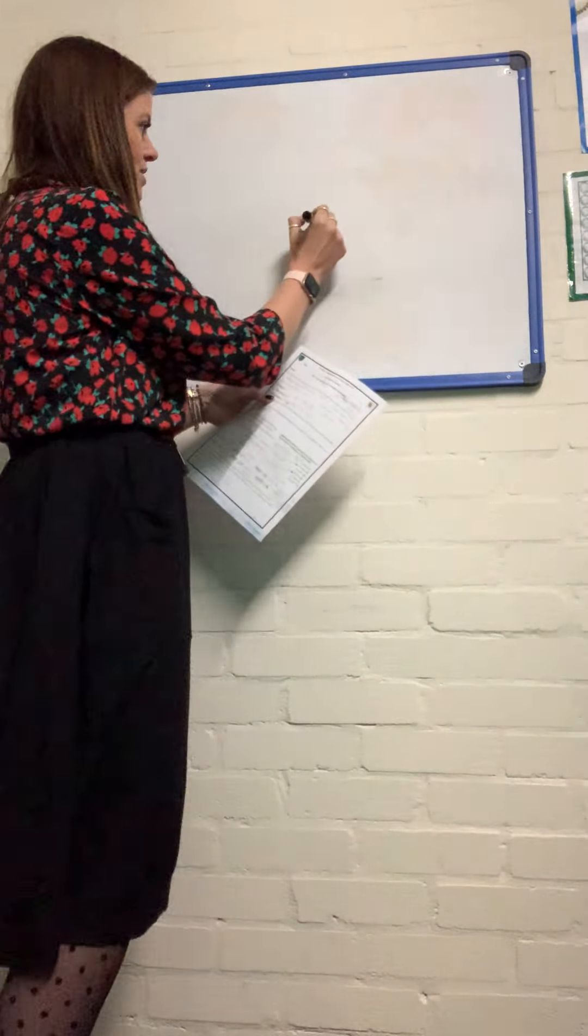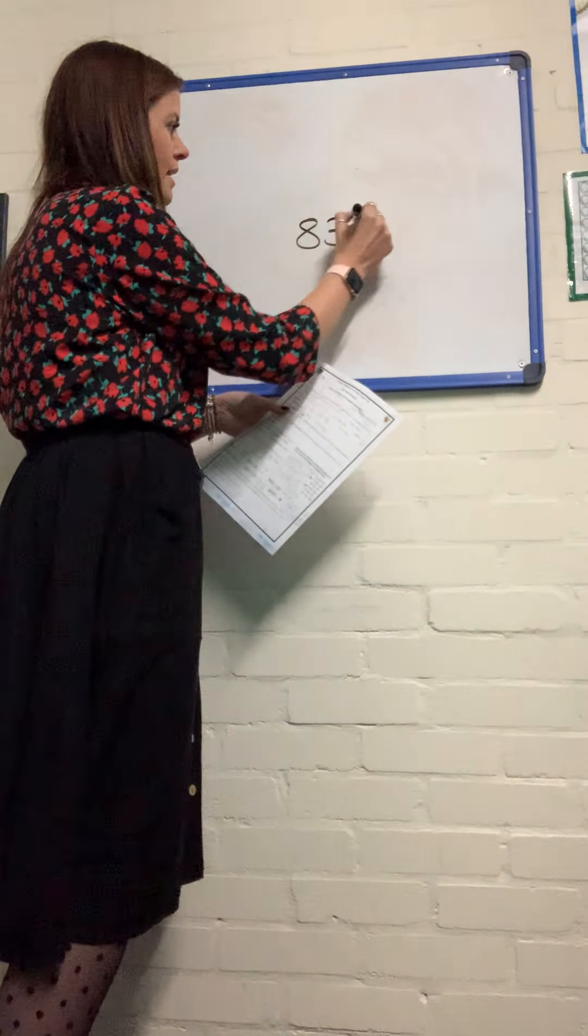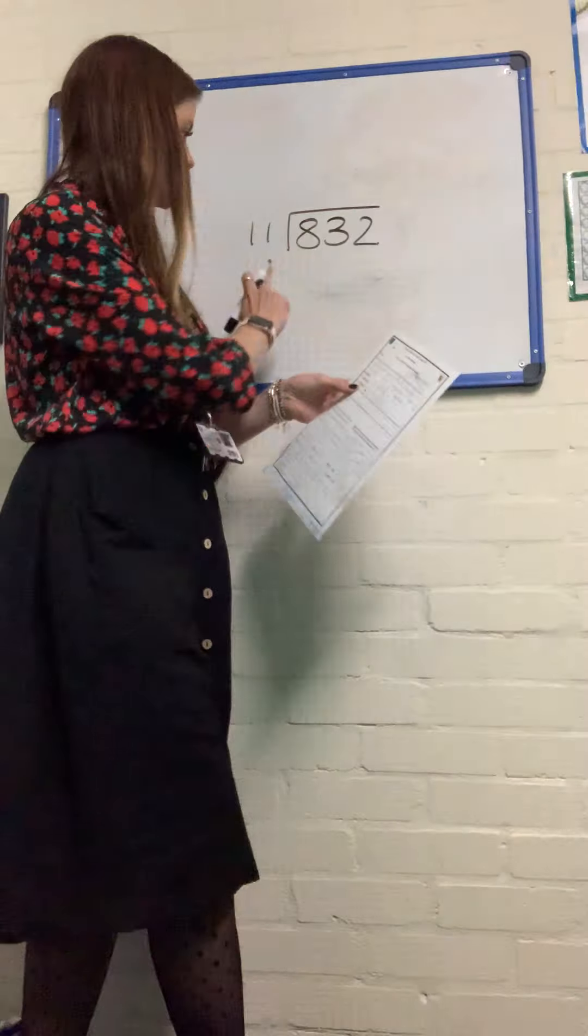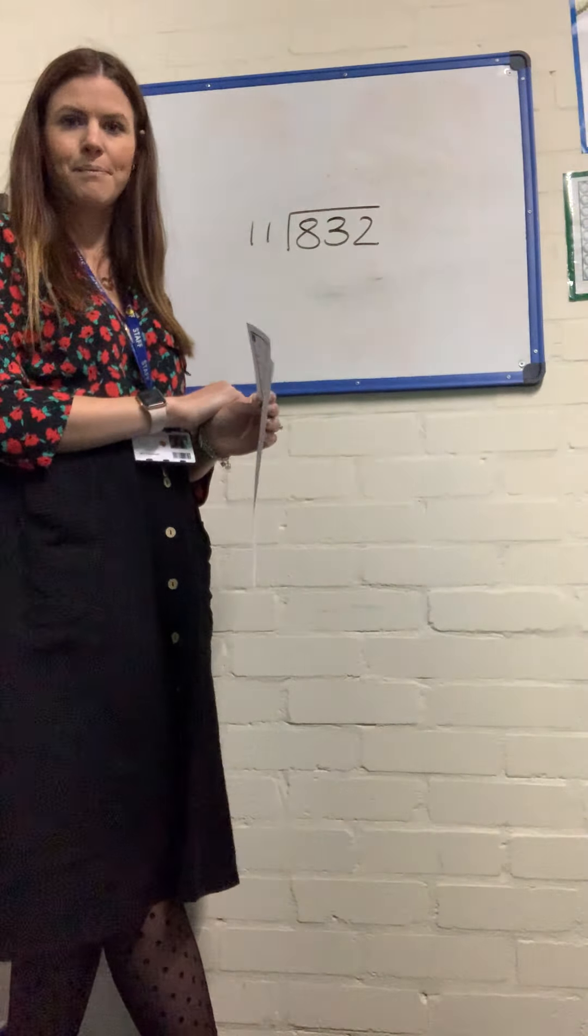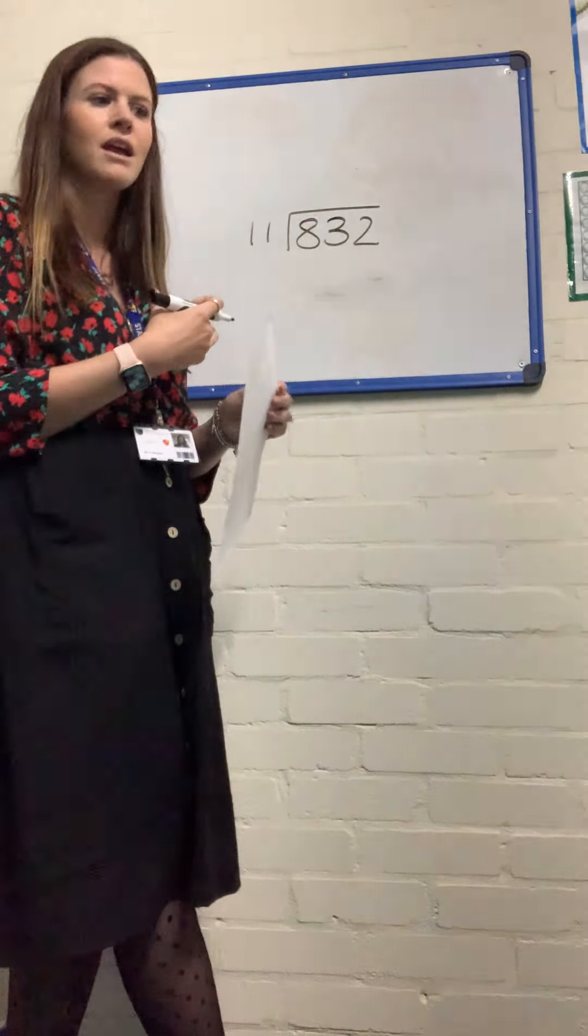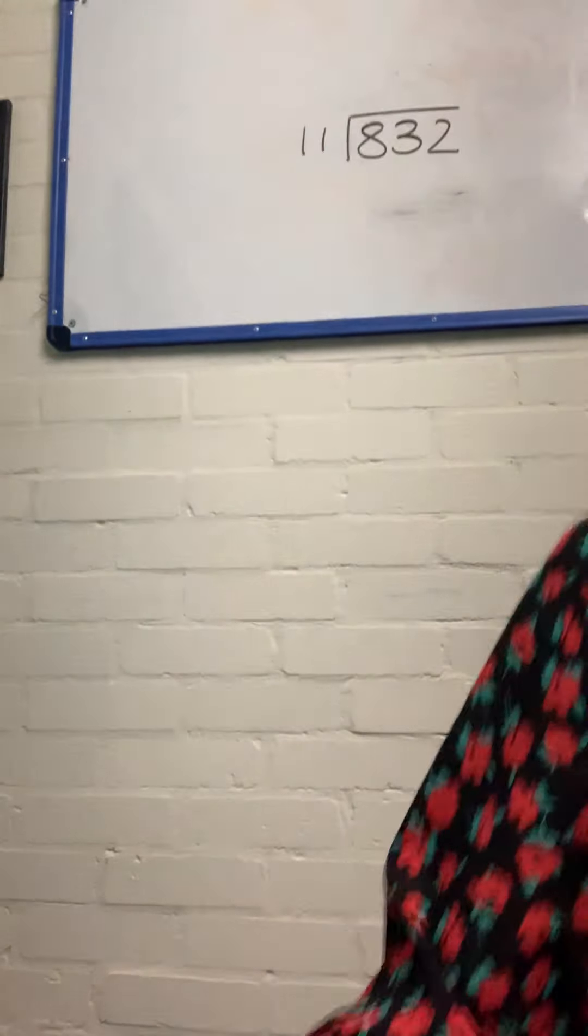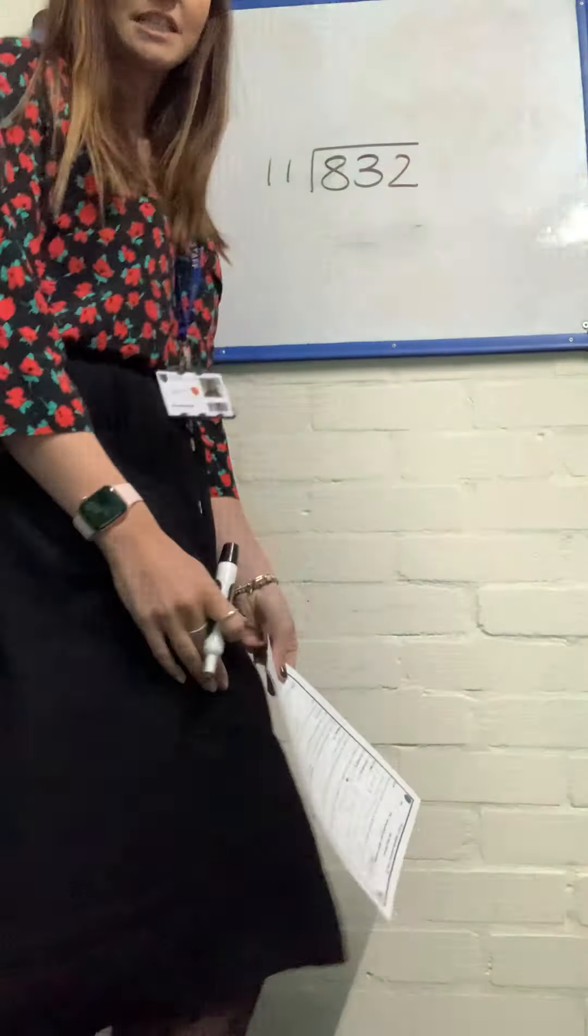So we have 832 divided by 11. Now this comes with the added challenge that we're dividing by a two-digit number. So we're going to use long division. It's a nice reminder of how to use long division and how to find remainders.